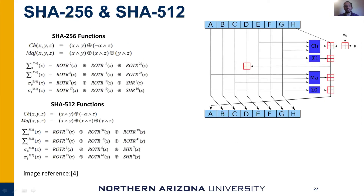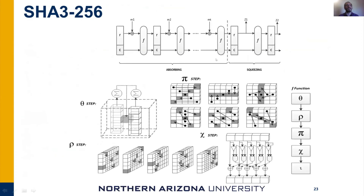SHA-256 and SHA-512 are very similar to each other, using almost identical functions where the rotate and shift functions are 32-bit for SHA-256 and 64-bit for SHA-512, with different block sizes and number of rounds. SHA-3-256 is more complicated than SHA-2; it uses a sponge construction with absorbing and squeezing stages, and performs a set of permutation operations in a row for a number of rounds.